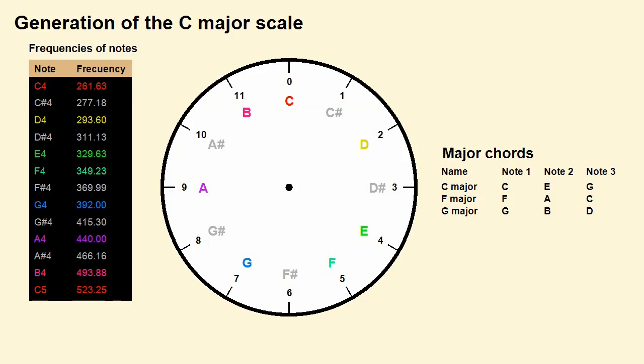Notice how in their progression on the clock face shown on the screen, the major chords of C, F, and G, whose conformation is shown in the table to the right of this face, seed the notes of the C major scale, which are shown colored.